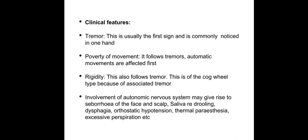Coming to rigidity: this follows the tremor. It is of a cogwheel type because of the associated tremor. Cogwheel rigidity is mostly seen in the upper limbs, while lead pipe rigidity develops mainly in the lower limbs. The whole body becomes rigid — there is rigidity of the neck, trunk, upper and lower limbs. As a result, there may be flexed neck and trunk, flexed and crossed upper limbs, and flexed lower limbs. The patient assumes a stooping forward posture during standing. Rarely, a hyperextended position may be seen.